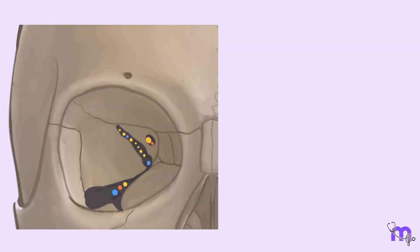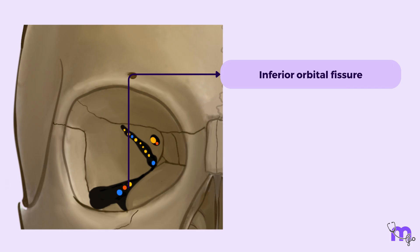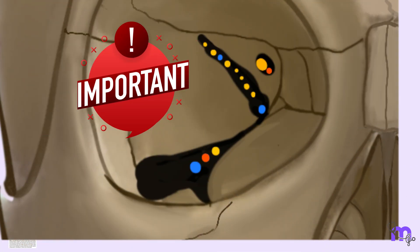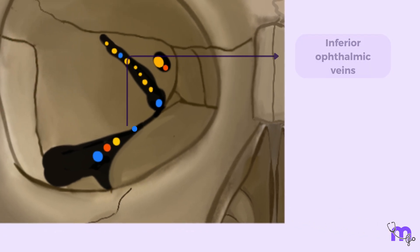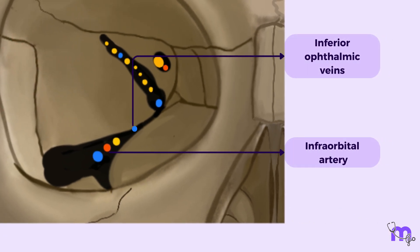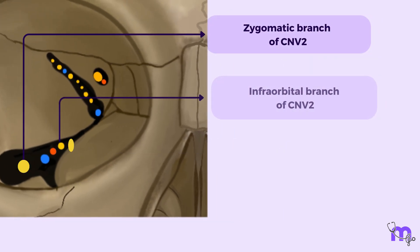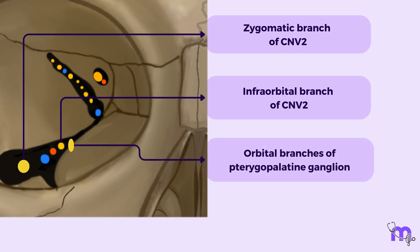The inferior orbital fissure is present on the floor of the orbit. Through this fissure we find the inferior ophthalmic veins, infraorbital artery, zygomatic and infraorbital branches of the maxillary division of the trigeminal nerve, and the orbital branches of the pterygopalatine ganglion.